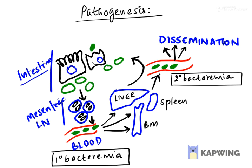A little bit about the pathogenesis of this condition. The bacteria first infects the intestinal epithelial cells. After infecting the intestinal epithelium, it proliferates in the mesenteric lymph nodes. After proliferation inside the mesenteric lymph nodes, it enters into the bloodstream — that is what we call primary bacteremia. Salmonella is an organism which is going to affect the reticuloendothelial cells.